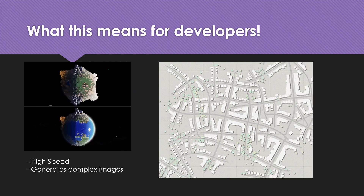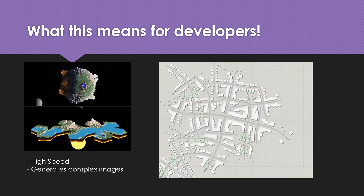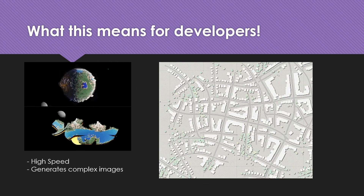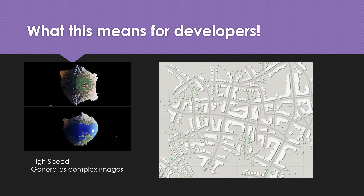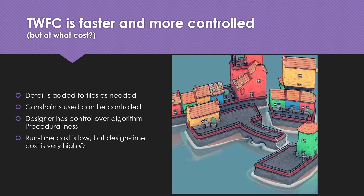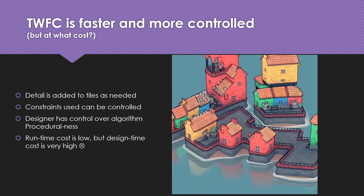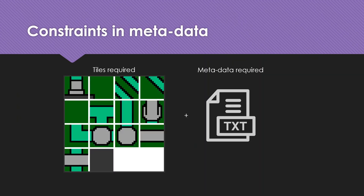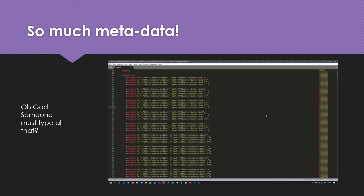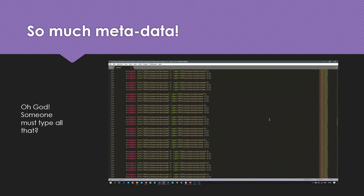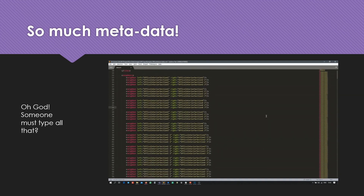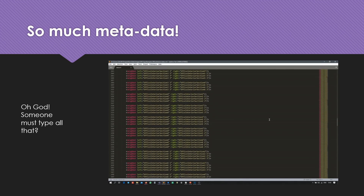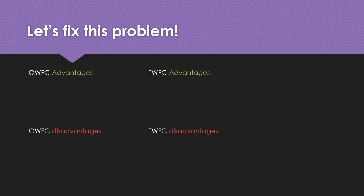For developers, by eliminating the kernel identification step, we now have a very high-speed algorithm. TWFC is also able to generate complex images through tiles, but we have a drawback: the design time for tiling wave function collapse is very high. The algorithm requires tiles and metadata. The metadata is a collection of all constraints as left-to-right tile relationships, which must be manually generated and can increase drastically in complexity with larger image sizes.